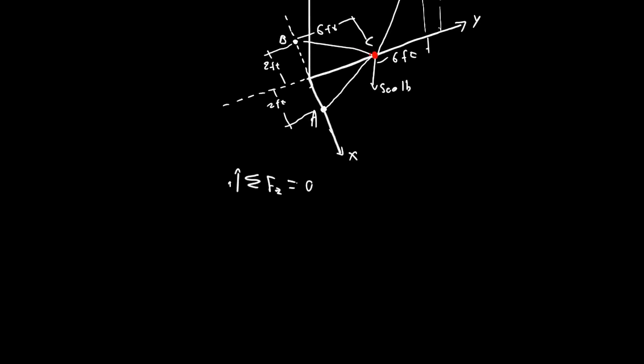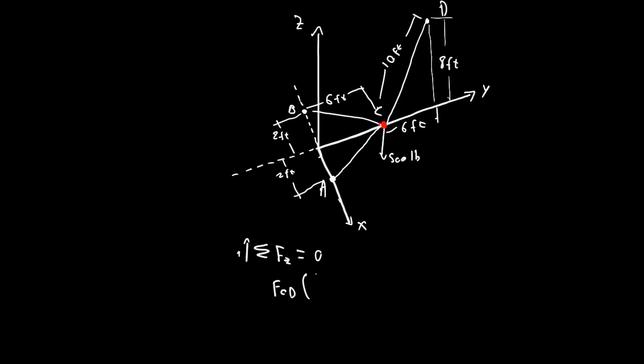So, sigma of the forces in the z equals zero, Fcd. We're assuming this to be under tension, because it's a cable, it wouldn't make sense otherwise. Fcd times, hold on, it's eight feet, six feet, so it's going to be a ten foot long segment. So, we're going to have, in the z component, it's going to be opposite over hypotenuse. So, opposite is eight feet, hypotenuse is ten feet, so Fcd times eight over ten, or 0.8, is going to be our Fcd minus 500 pound, which is our force at C, and that equals zero.